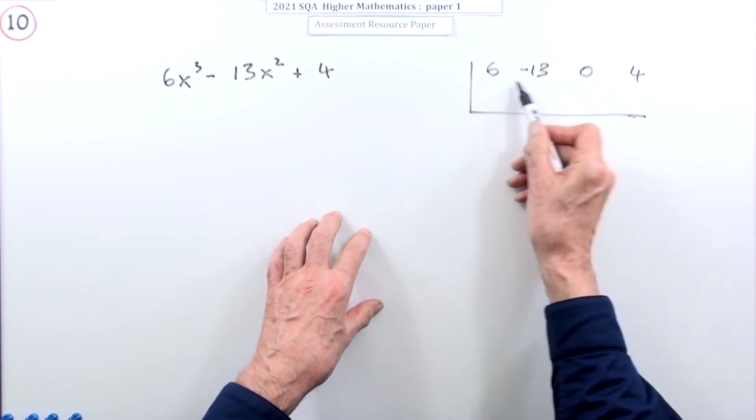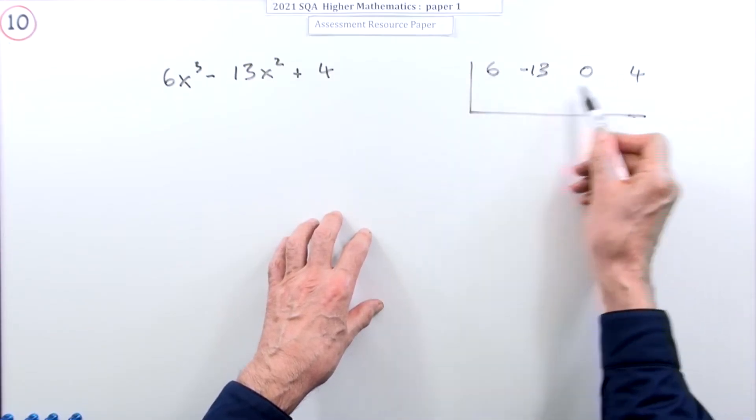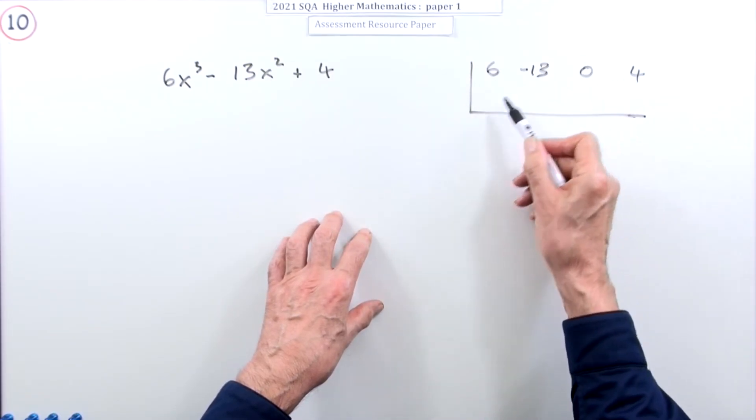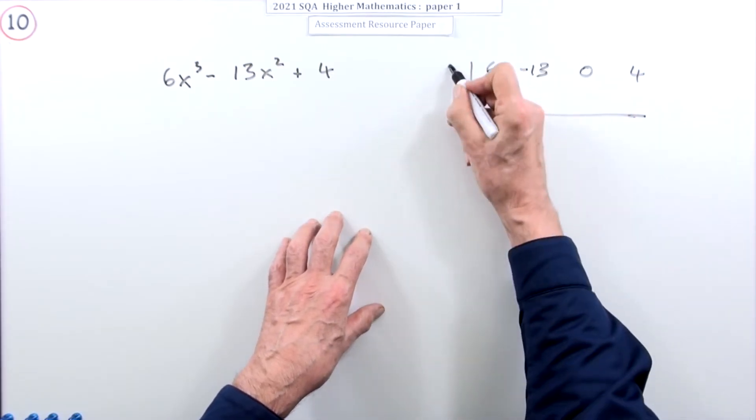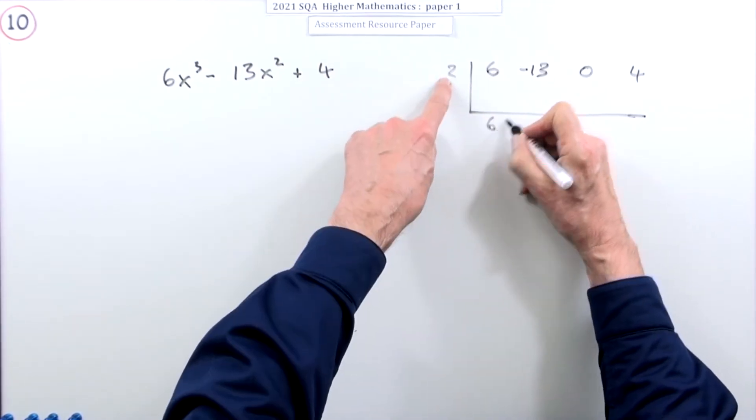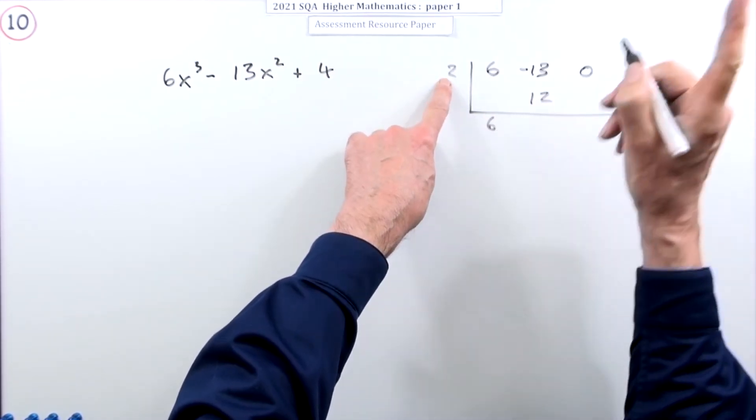You can see the one won't work because one won't change any of these numbers, so that's not going to go across. When you put the six onto that you've got seven and that just carries on to the four, so forget that. So we'll try the two. Let's bring it down, multiply it up, 12.